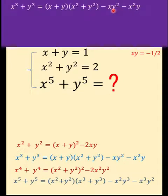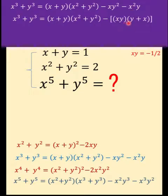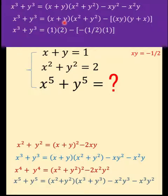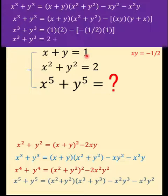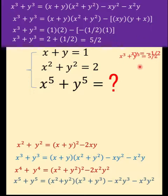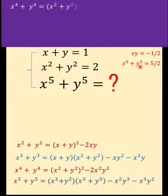Next, let's go to x cubed plus y cubed. We can simplify this because there is a common factor of xy. Replacing the values — x plus y equals 1, x squared plus y squared equals 2, xy equals negative one half, and x plus y equals 1 — this is equal to five halves. Let's remember this value.